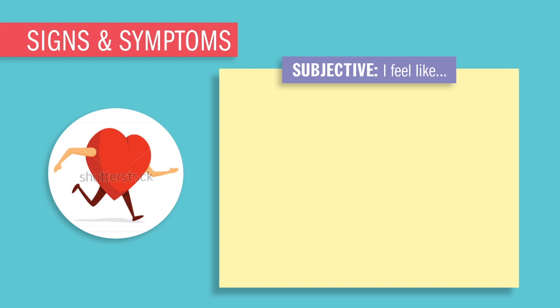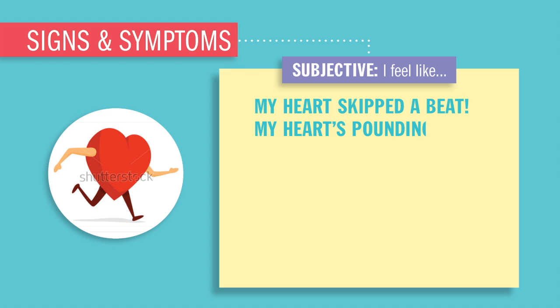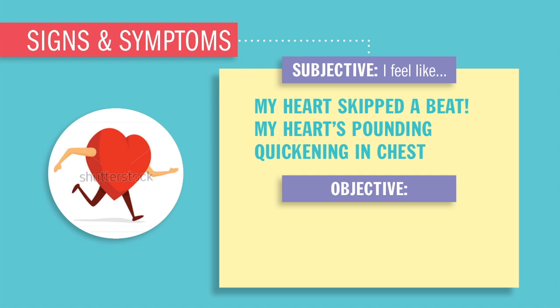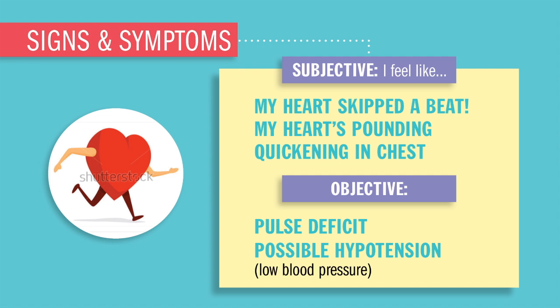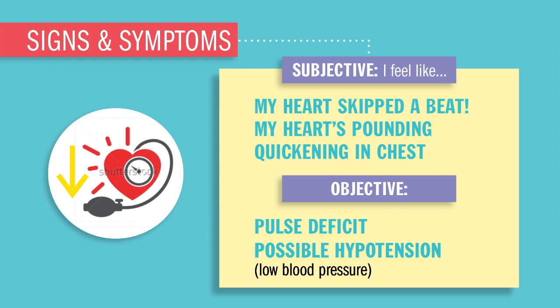Now, signs and symptoms for premature contractions. We usually don't see any signs and symptoms with mild cases. You may have even experienced a premature contraction today and didn't even realize it. But if by chance you have multiple premature contractions in a row, then your patients might say things like: 'I feel my heart skipping a beat,' 'I feel my heart pounding,' or 'I feel a quivering in the chest.' There may also be a pulse deficit and possibly hypotension — low blood pressure.